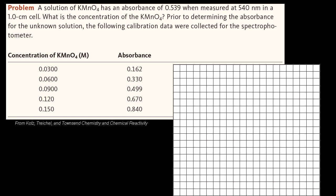Let's tackle this spectrophotometry example, taken from the Kotz, Treichel, and Townsend Chemistry and Chemical Reactivity book with their permission. A solution of potassium permanganate has an absorbance of 0.539 when measured at 540 nanometers in a 1 centimeter cell.